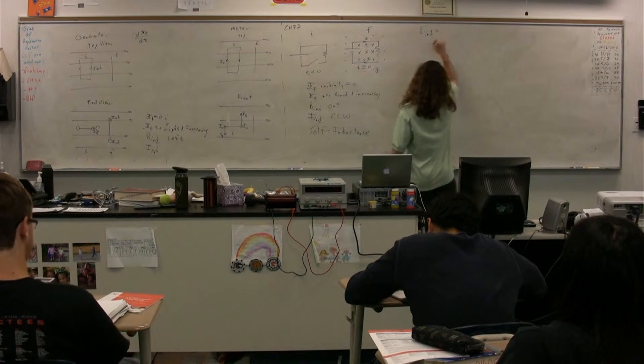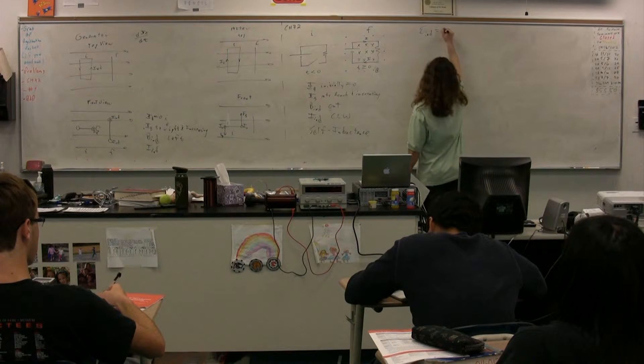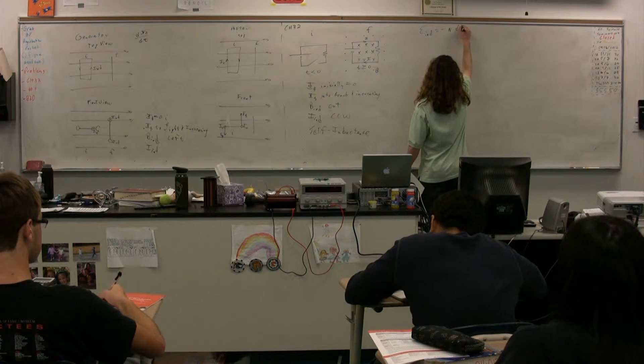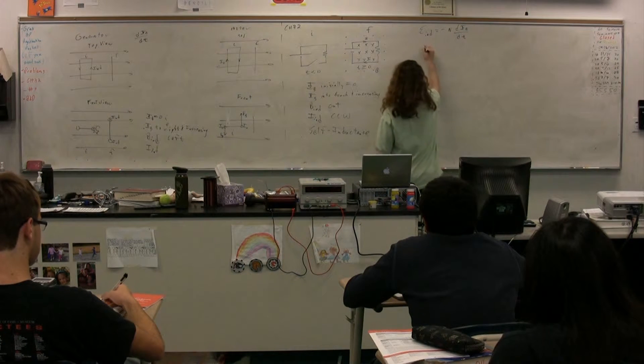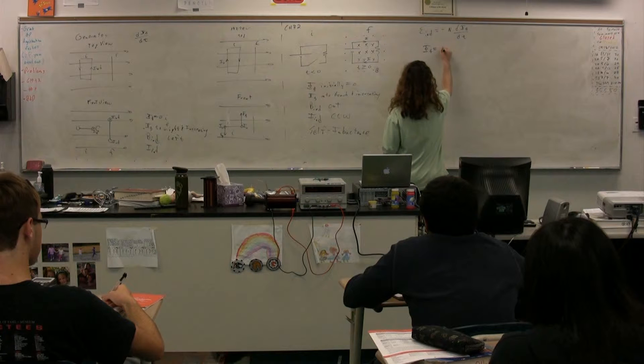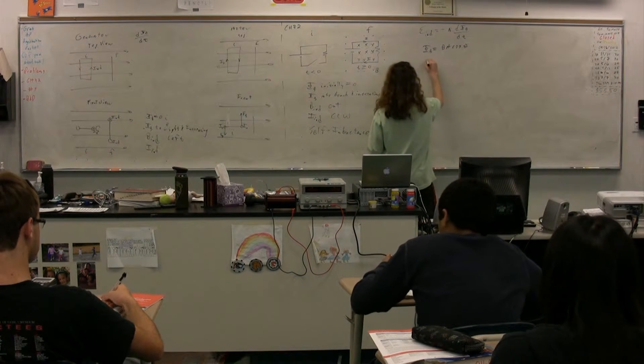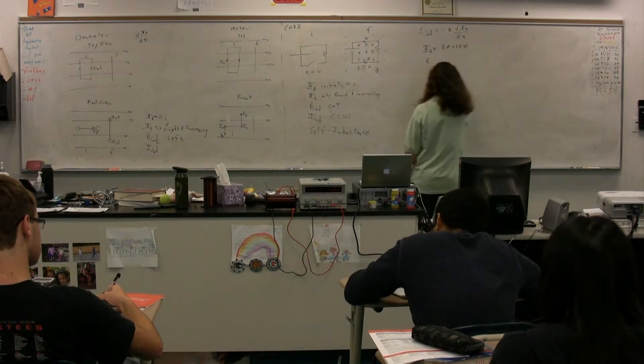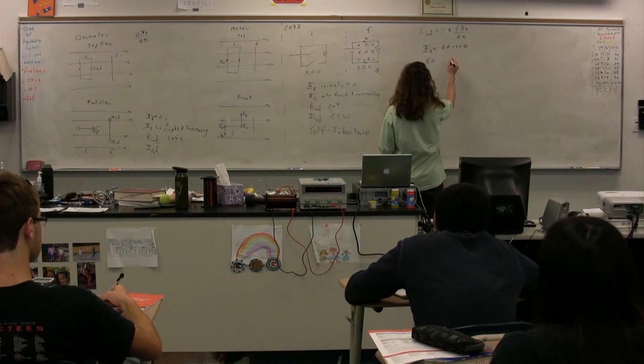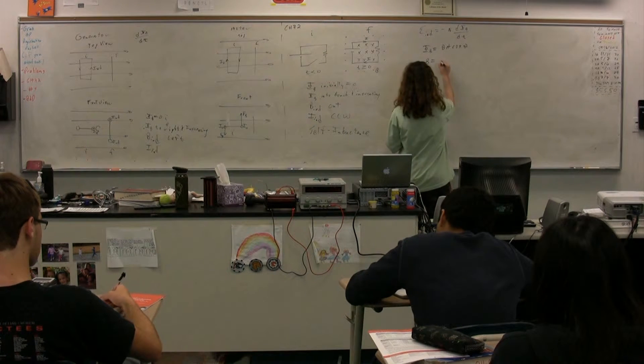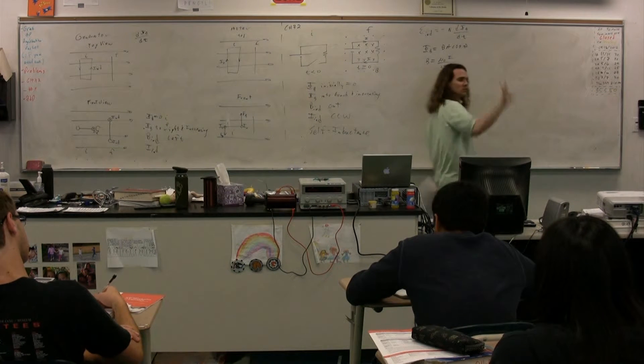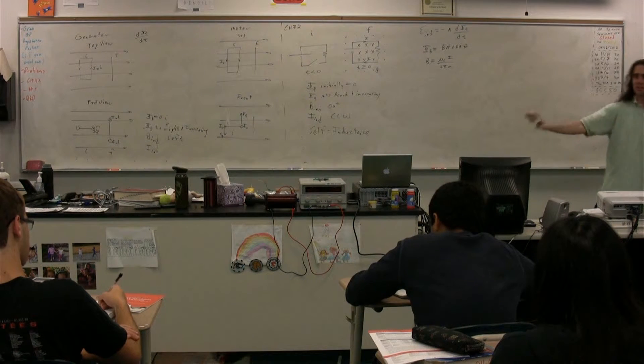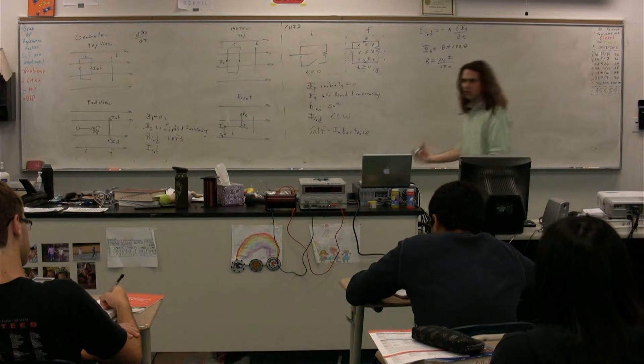Faraday's law of induction was the induced EMF is equal to the negative of the number of loops times the derivative of the magnetic flux as a function of time. We know magnetic flux is equal to B A cosine theta, and we know the magnetic field around the current carrying wire is equal to, we've already defined it, mu naught I over 2 pi A, just for the magnetic field from an infinitely long current carrying wire, right? Just to give an example.